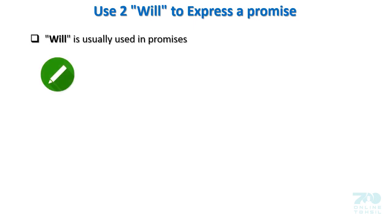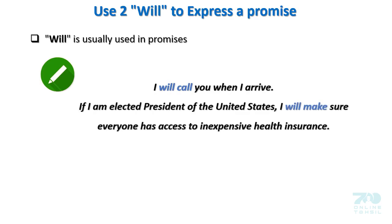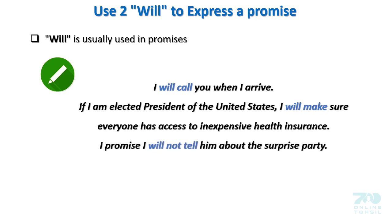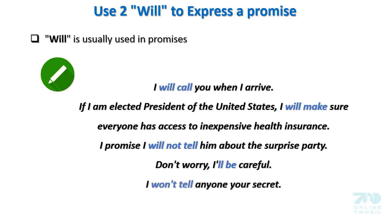Use 2: will to express a promise. Will is usually used in promises. Examples: 'I will call you when I arrive.' 'If I am elected President of the United States, I will make sure everyone has access to inexpensive health insurance.' 'I promise I will not tell him about the surprise party.' 'Don't worry, I will be careful.' 'I won't tell anyone your secret.'